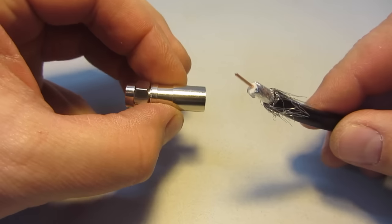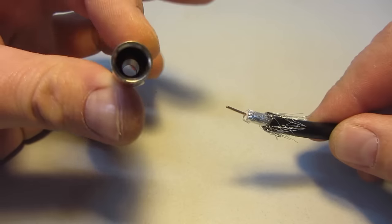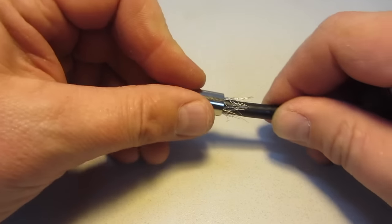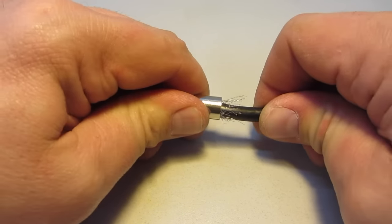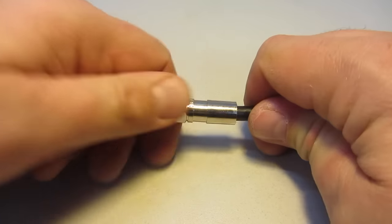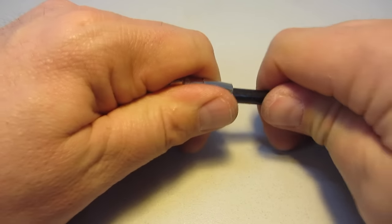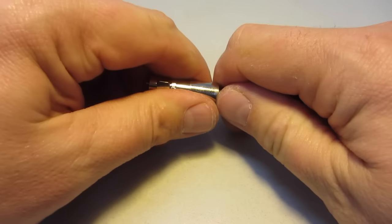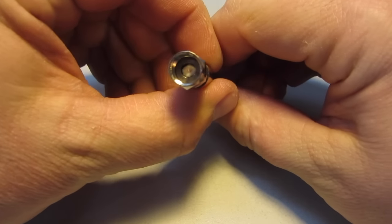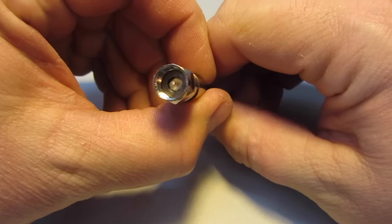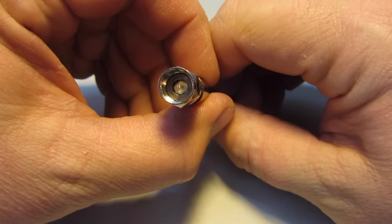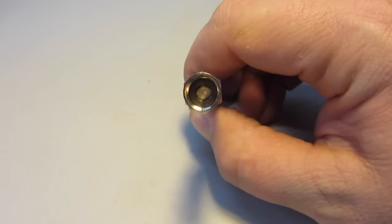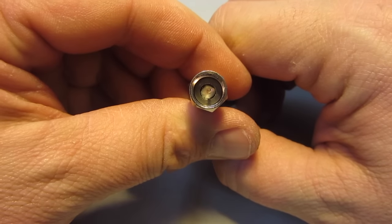I will now insert the cable end into my F connector. Pushing it on. Sometimes it is a little tough to do. Pushing it on until the white core seats in the catch there. Just like that.